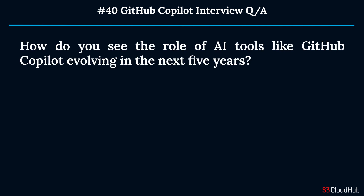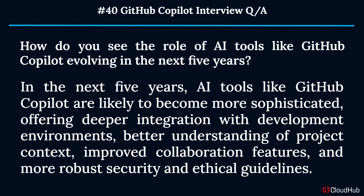Question forty: How do you see the role of AI tools like GitHub Copilot evolving in the next five years? In the next five years, AI tools like GitHub Copilot are likely to become more sophisticated, offering deeper integration with development environments, better understanding of project context, improved collaboration features, and more robust security and ethical guidelines.